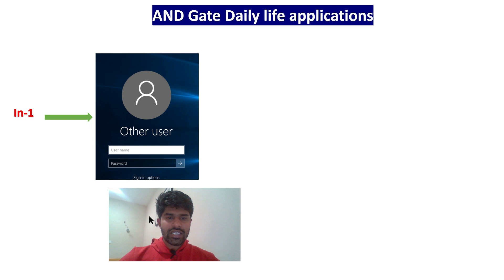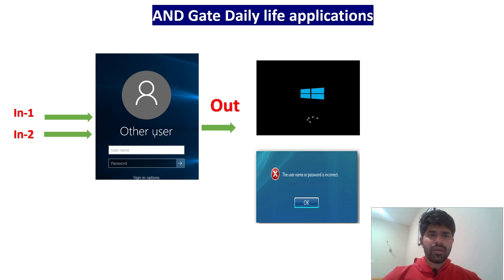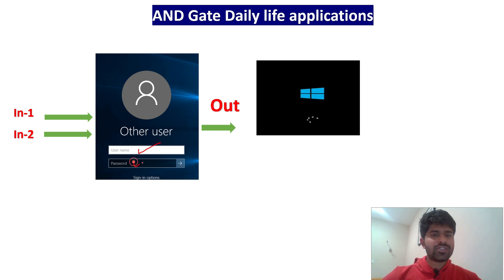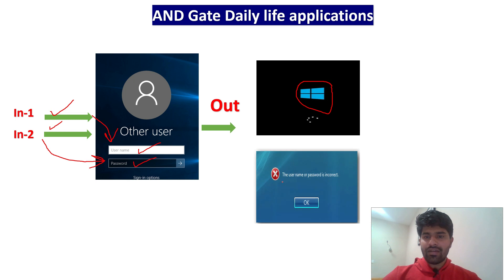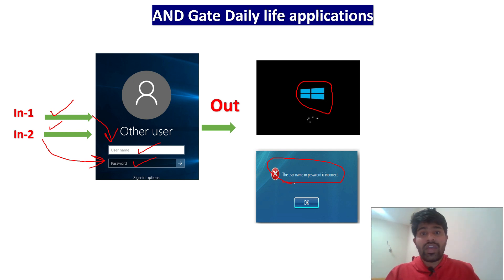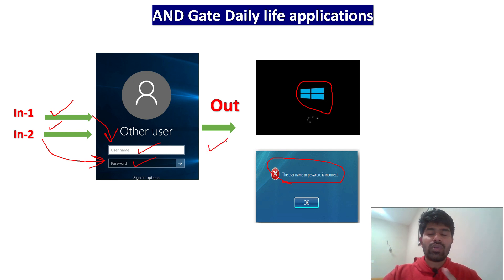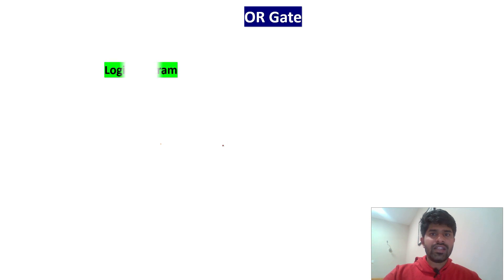The daily life application of AND gate: when logging into the computer, it will ask for the username and also the password — both should be correct. Consider input one as username and input two as the password. If both are correct, output will activate Windows. If not correct, it will say the username or password is incorrect. This is how we have to learn technology — in school we learn algebra but don't know where to apply it. This is how we should learn every single concept.